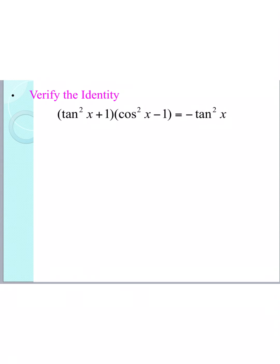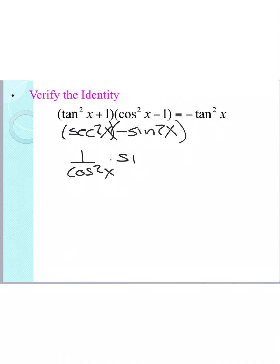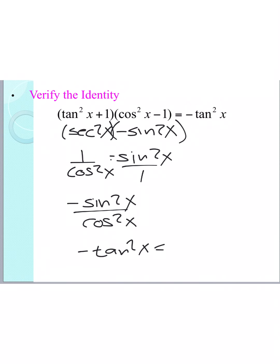For this next example, we have (tangent squared of x plus 1) times (cosine squared of x minus 1). That side is definitely more complicated than negative tangent squared. For both expressions I'll use my Pythagorean identities: tangent squared plus 1 translates directly into secant squared, and cosine squared minus 1 equals negative sine squared. Rewriting secant squared as 1 over cosine squared using the reciprocal identity, and multiplying by negative sine squared, gives negative sine squared over cosine squared, which simplifies to negative tangent squared.